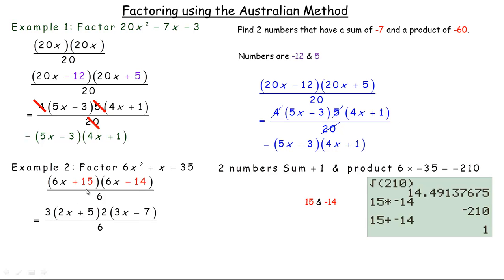6x divided by 3 is 2x, 15 divided by 3 is 5. 2 goes into 6x, 3x times, and negative 14 divided by 2 is negative 7. And of course, 3 times 2 is 6, so they divide with the 6 down here. And your factors are 2x plus 5 times 3x minus 7. So that's a couple of examples of how you factor using the Australian method.